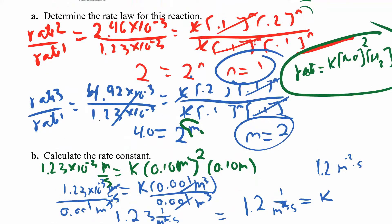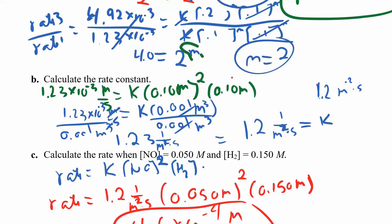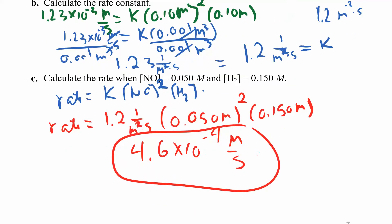Just to summarize how we do these problems: first, solve for M and N to get your rate law. If N or M is 1, you don't have to write the exponent - though you can. If it's 0, just don't include that concentration at all, since anything to the zero power is one. Second, take the rate and concentrations from the table and solve for K. Third, plug your K in with the new concentrations they give you and solve for the new rate.